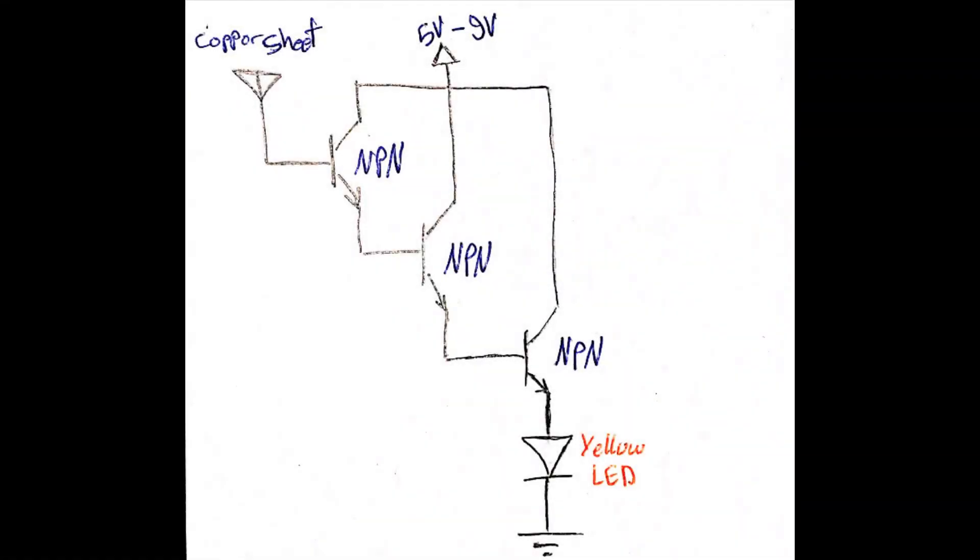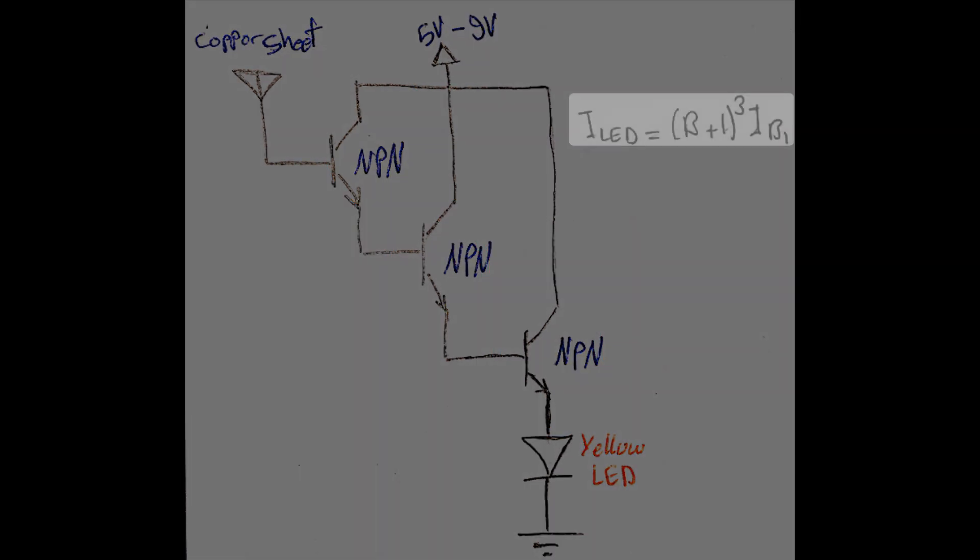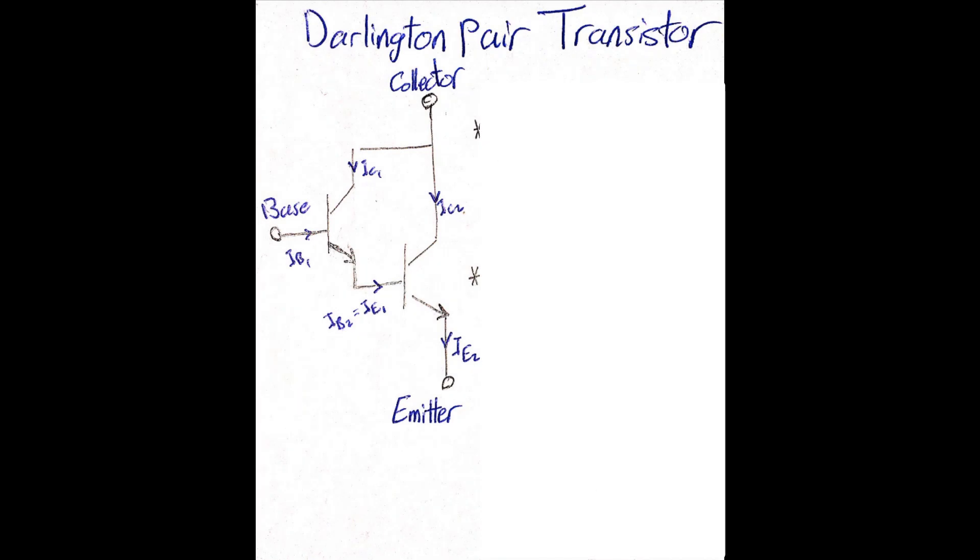Alright, now let's focus on this transistor-based voltage detector circuit. At the first look, the circuit seems very simple. But why these NPN transistors are connected this way? Well, to understand this, let's find the total emitter current in Darlington pair transistor.